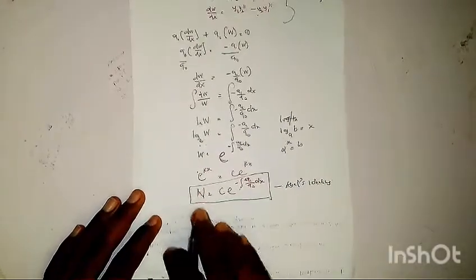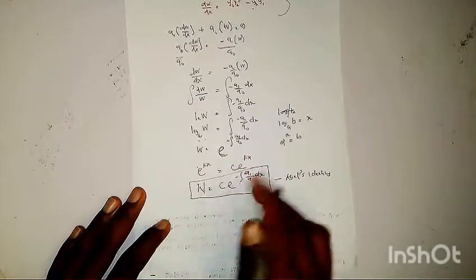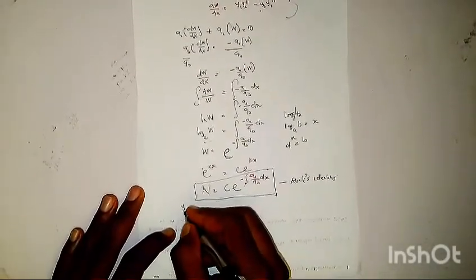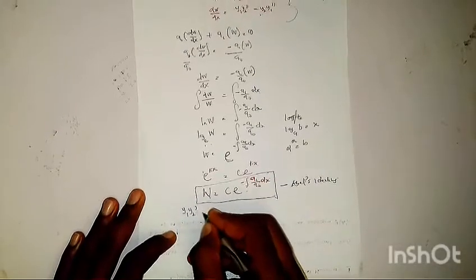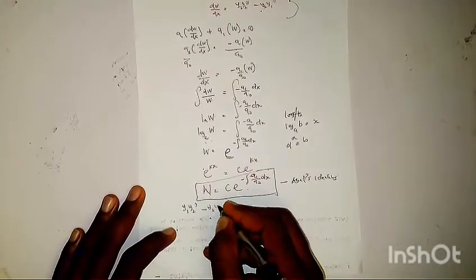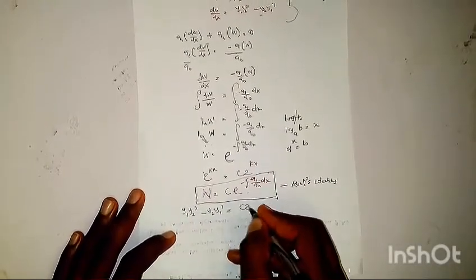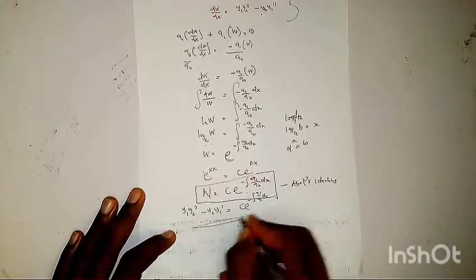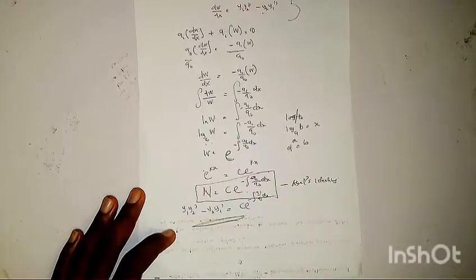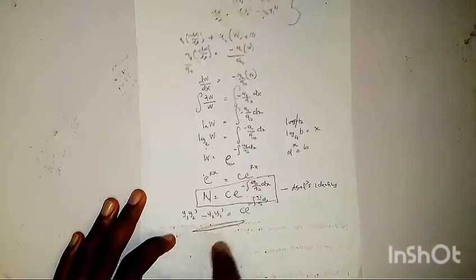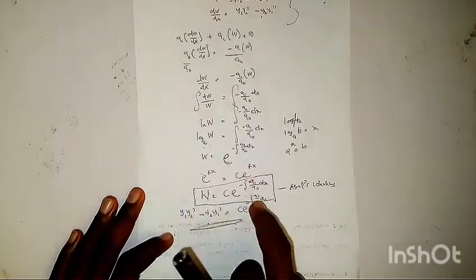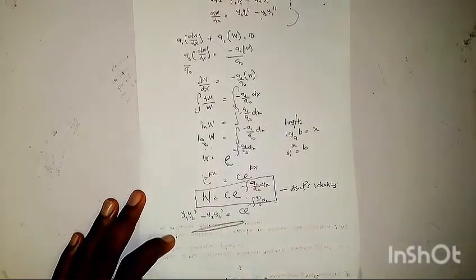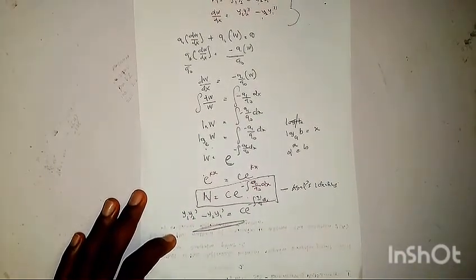So Abel's identity states that the Wronskian of y1 and y2, which is y1 y2' minus y2 y1', equals c times exponential of minus the integral of a1 over a0 dx. We can use this to verify the Wronskian or vice versa. Thank you for watching.